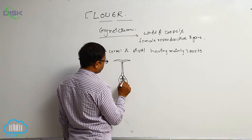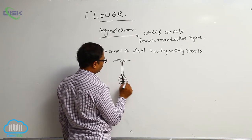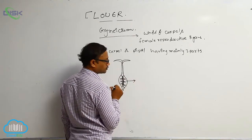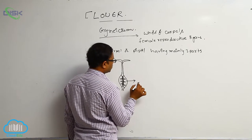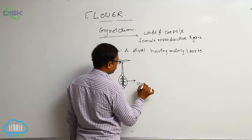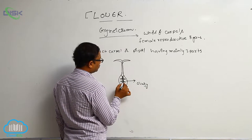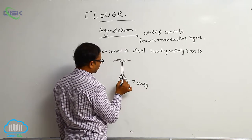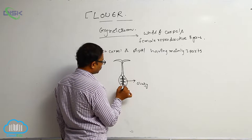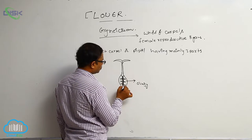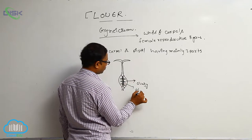At the base of that pistil or carpel, there is a swollen-like structure. This swollen-like structure is known as the ovary. Inside the ovary there is a cushion-like tissue, and this cushion-like tissue is known as the placenta.